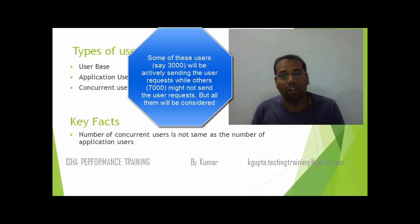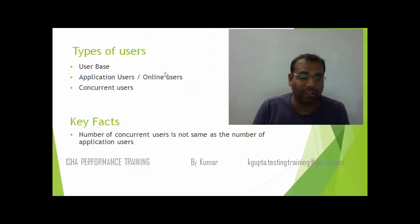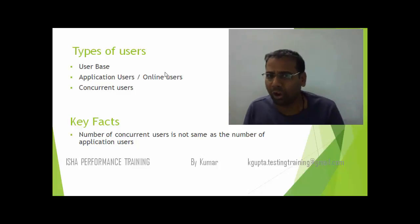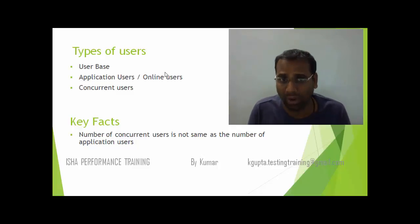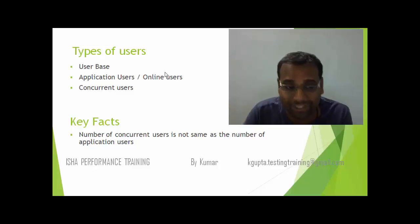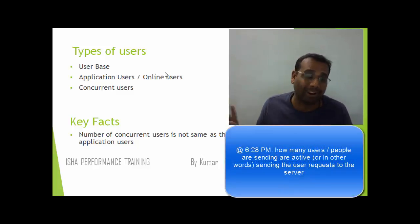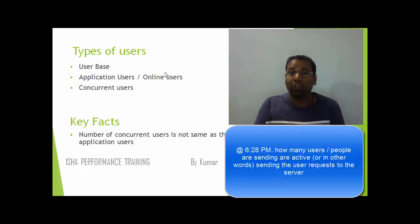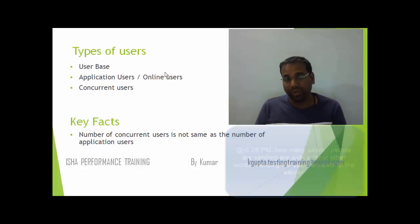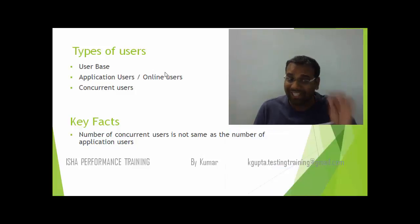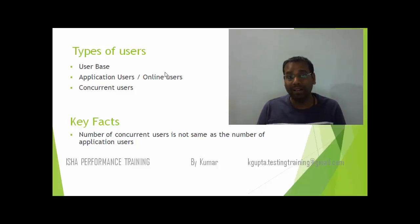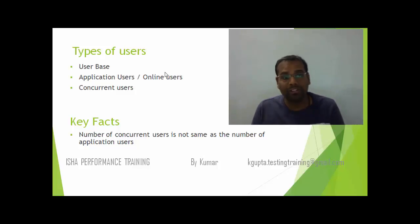Now, concurrent users — this is very important when it comes to performance testing. Concurrent users are not only those who have logged in, but those who are actively sending requests at that point in time. At 6:28, how many people are actively sending requests to the server or actively using the Gmail application? Those are concurrent users. When we do performance testing, we consider the concurrent users most importantly, though we also consider user base and application users.